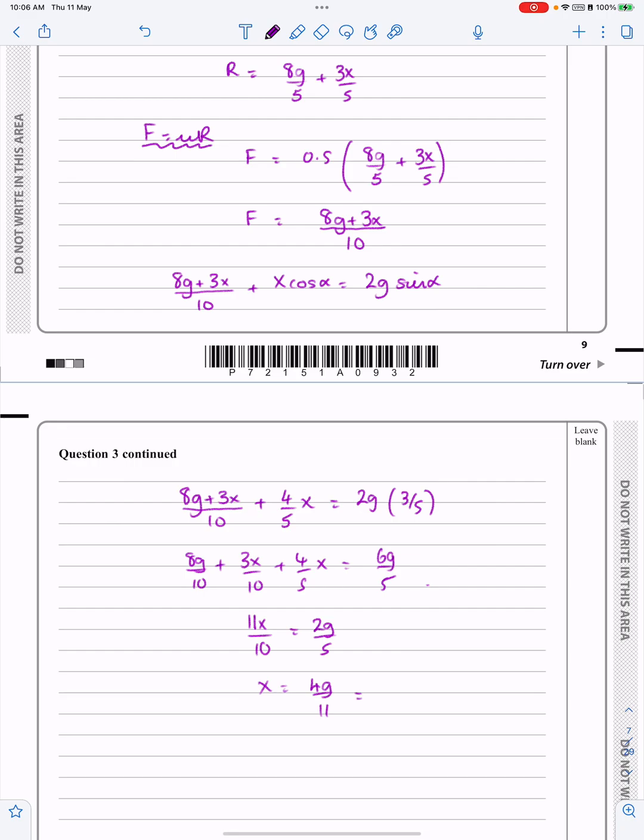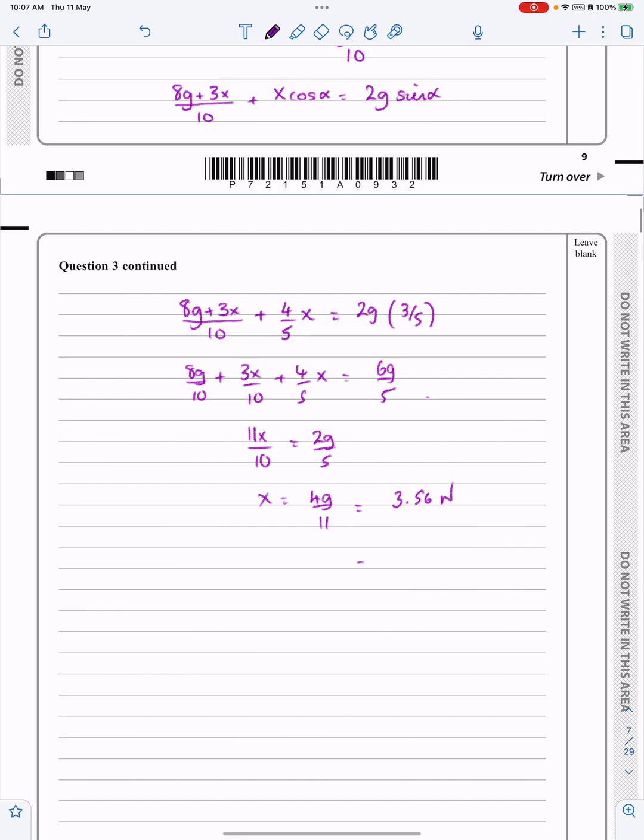No problem with doing that sort of thing. You notice I've left g in my answer all the way through there. There could be another question where they ask you the exact value or they ask you to prove it's equal to 4g over 11, but if you'd wanted to, you could have put all your values in. That works out to be 3.56 newtons. Hopefully, try not to get caught out with the fact it should be two significant figures because we've used 9.8. That's how you do that question. Hopefully that all makes sense.